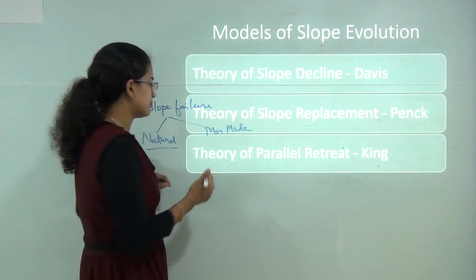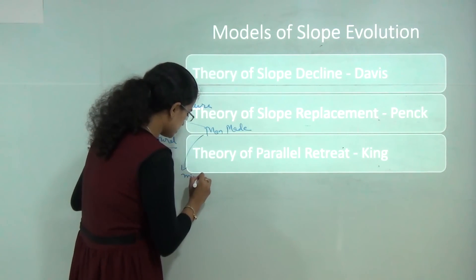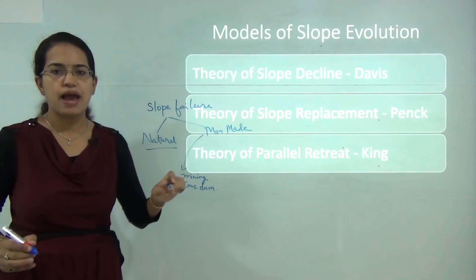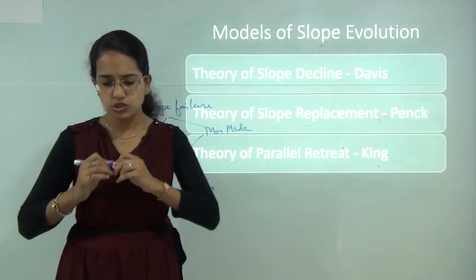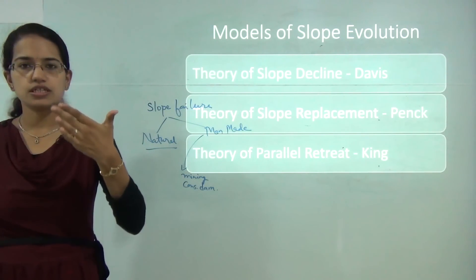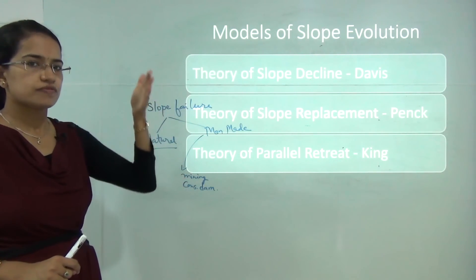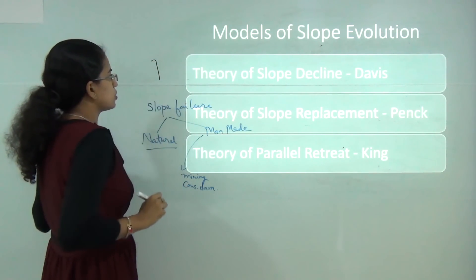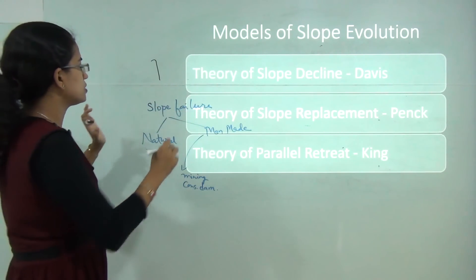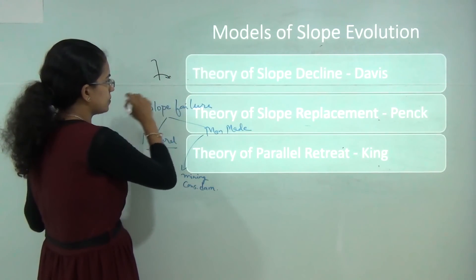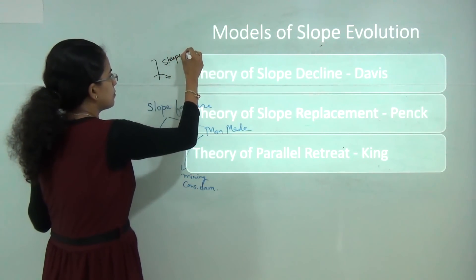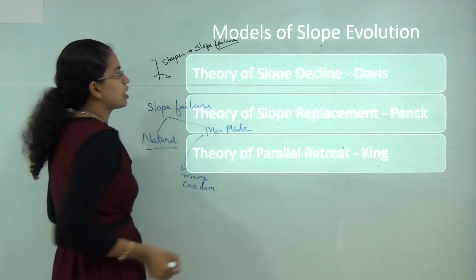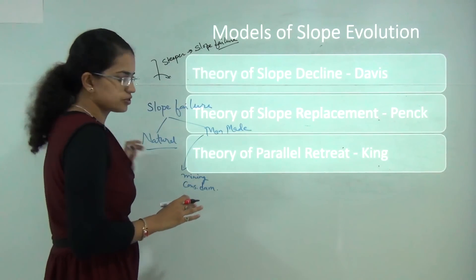Manmade causes of slope failure include mining, construction activities, and construction of dams. Slope failure is more pronounced in regions where there is a steep slope — the steeper the slope, the higher the chances of failure. Therefore, steeper slopes are more prone to slope failure.